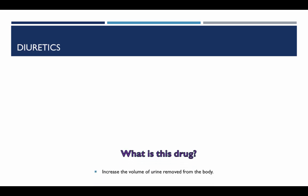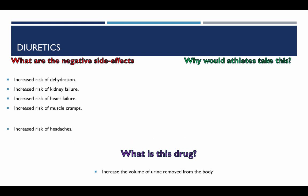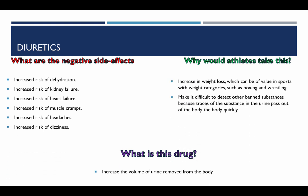Diuretics. What is this drug? It increases the volume of urine removed from the body. The negative side effects include an increased risk of dehydration, kidney failure, heart failure, muscle cramp, headaches, and dizziness. Why would an athlete take these? This increases weight loss, which can be valuable in sports with weight categories such as boxing and wrestling. It also makes it difficult to detect other banned substances, as traces pass out of the body quickly — so an athlete would take diuretics to mask other drugs.